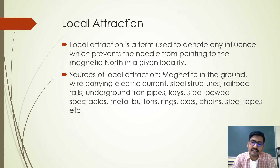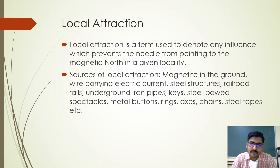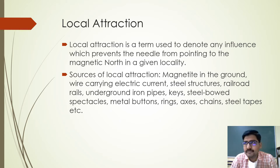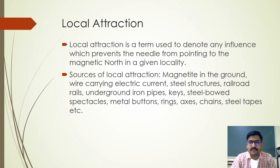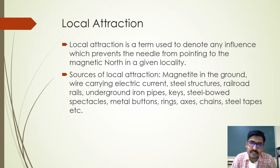The word 'local attraction' has been derived to denote the influence of foreign material which prevents the needle from showing the correct magnetic north. Generally, when you work with the compass in the field, you fix it at some point and measure the bearing of a certain line. The magnetic needle's accuracy and sensitivity depend on numerous factors in and around the locality. Materials which influence the magnetic needle from showing the correct north include metals nearby.